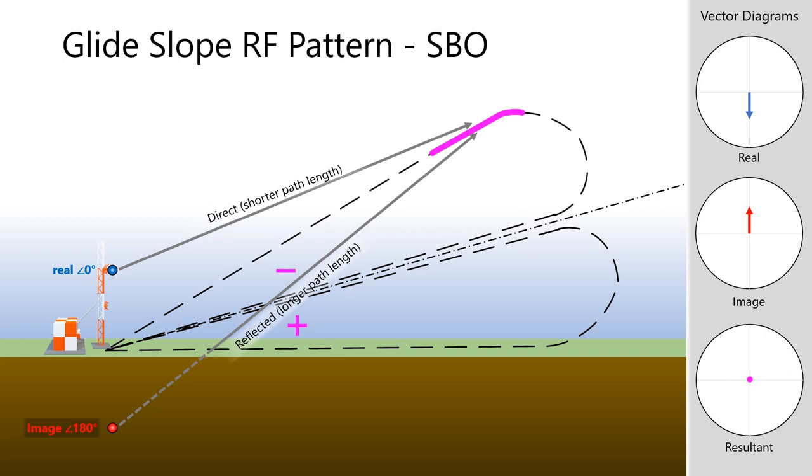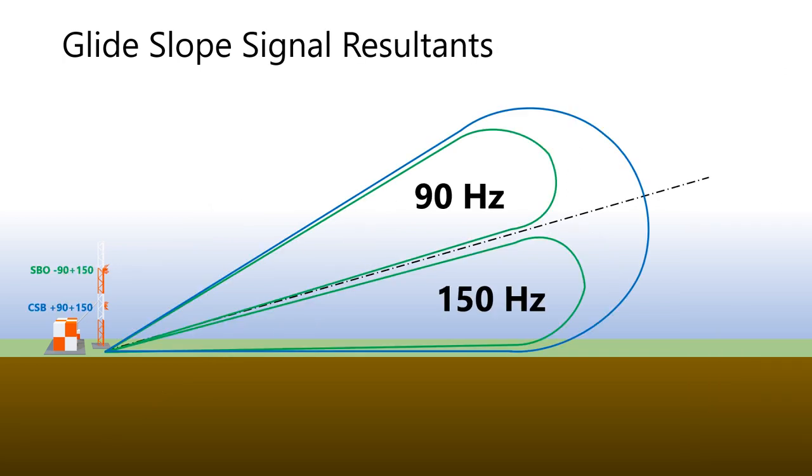Recall that 150 Hz predominates below the glide path and 90 Hz predominates above. We will now see how the audio phase relationships of the 90 and 150 Hz combines with the lobe phases produced by the antenna array to allow for this result. This again assumes CSB and SBO are properly phased to each other.